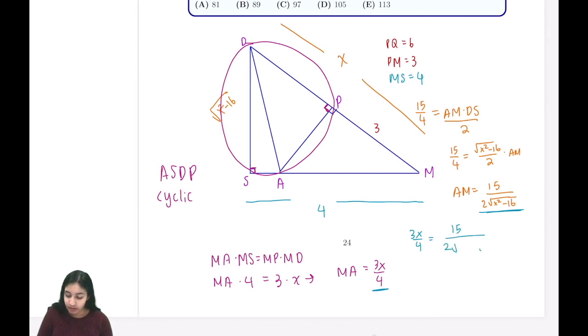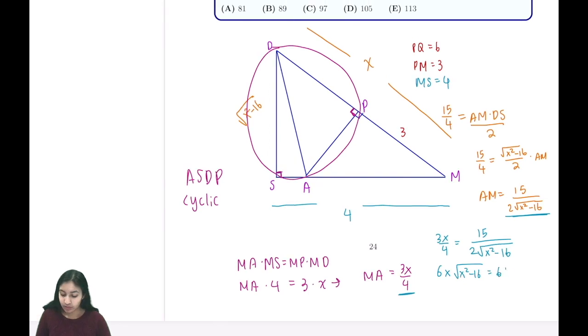We have 3x over 4 equals 15 over 2 times the square root of x squared minus 16. Cross multiplying, we get 6x times the square root of x squared minus 16 equals 60. Dividing by 6, then squaring our expression, we get x squared times x squared minus 16 equals 100.